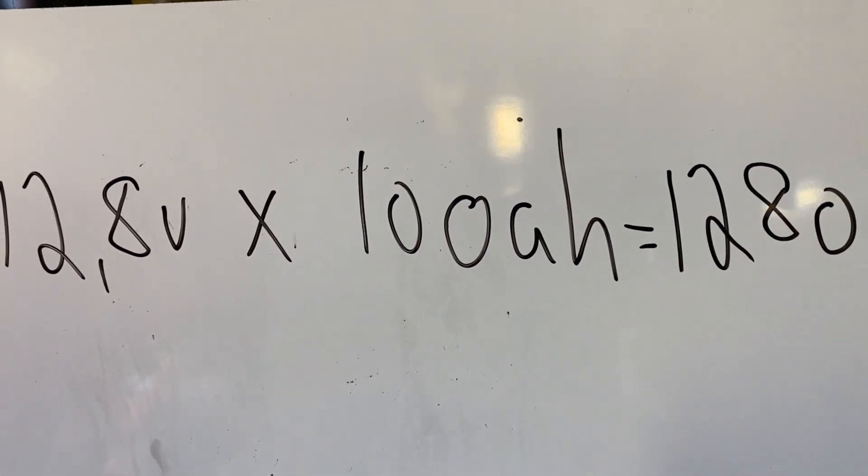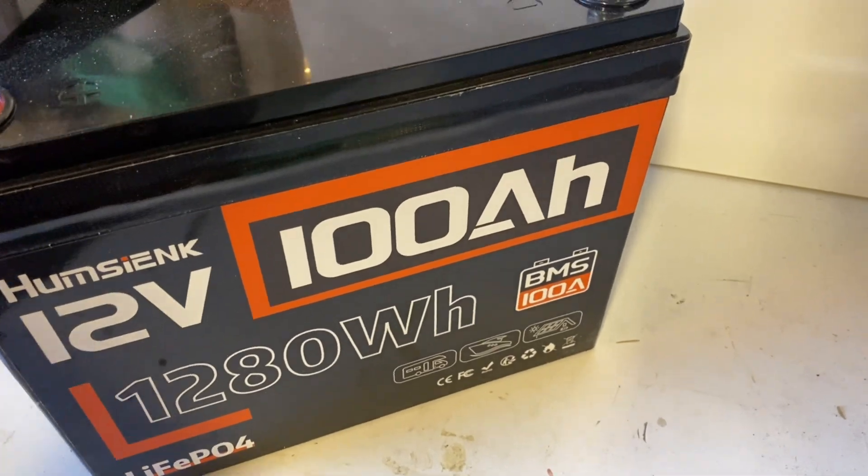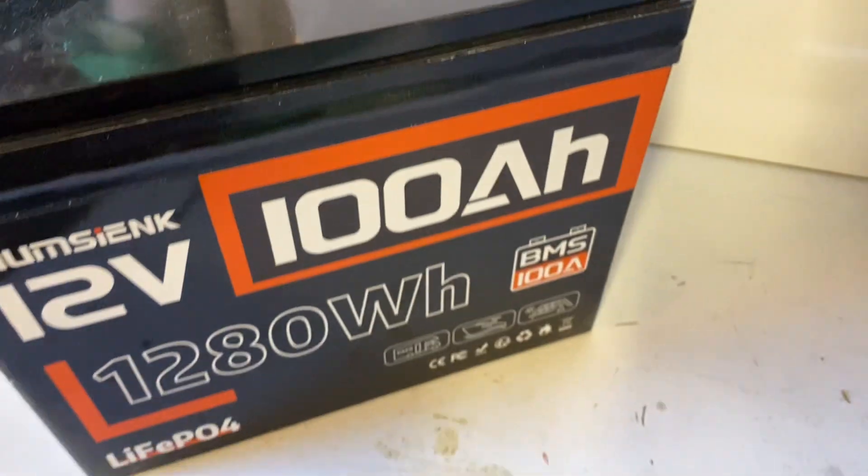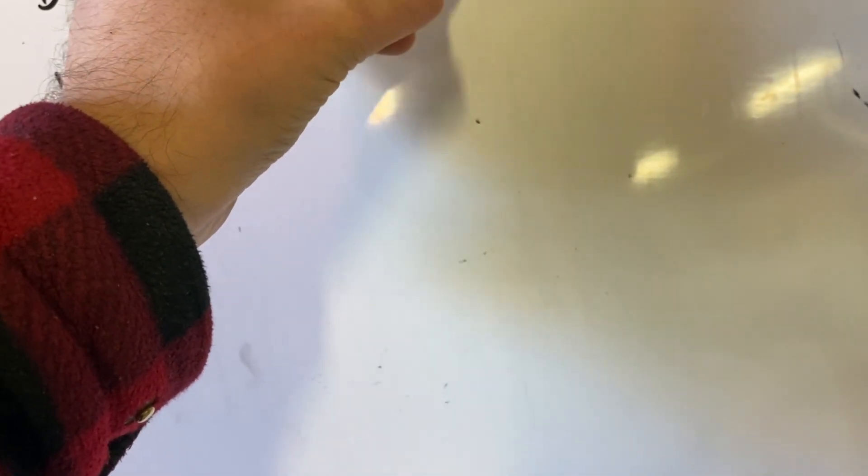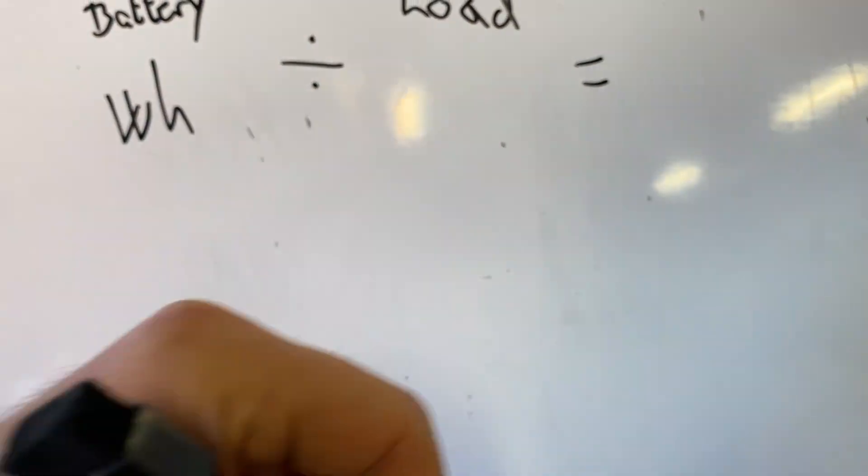Cool, right? Now to calculate the load and run time, there is a simple formula: watt hours battery divided by your load equals run time.